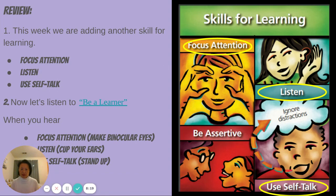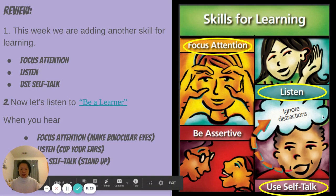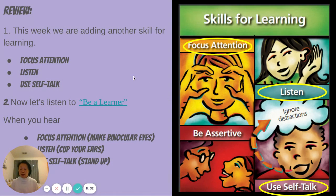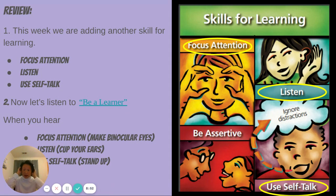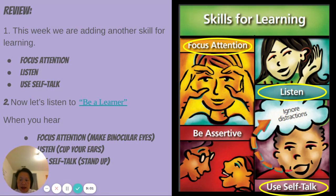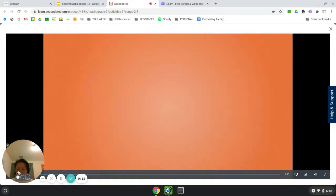Let's do a little review. This week we added another skill for learning. We've learned focus, attention, and listening — that was last week. And this week we learned about using self-talk, which is basically ignoring distractions. Now we're going to watch the music video 'Be a Learner,' and this week we're going to have some action steps. When you hear anything having to do with focus or attention, you're going to make binocular eyes — that means you're focusing. When you hear anything having to do with listening, you're going to cup your ears. And when you see anything having to do with self-talk, you're just going to stand up. I am going to play that video and do it with you.